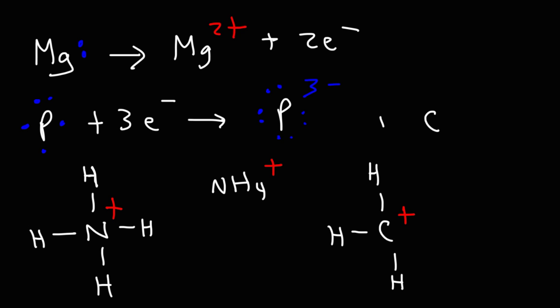But carbon can also have a negative charge, which is typical of many non-metals. So this here is known as a carbanion. So remember, anions have negative charges. Cations have positive charges.